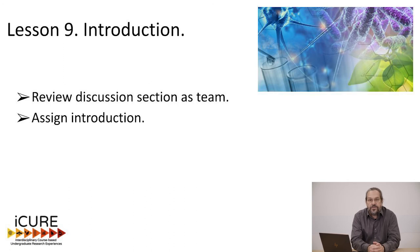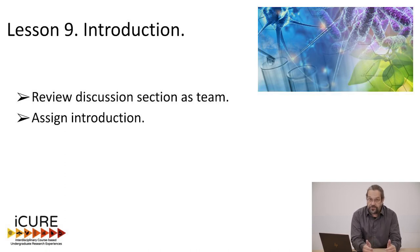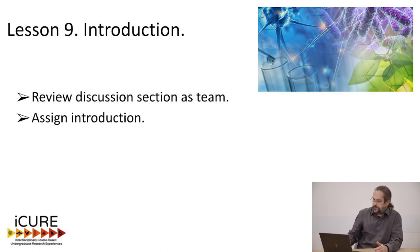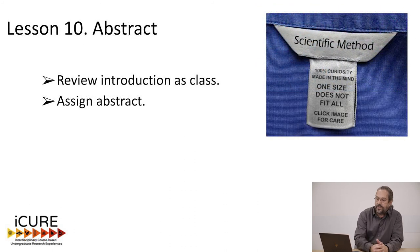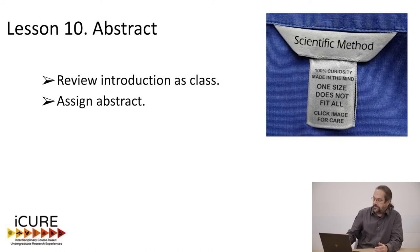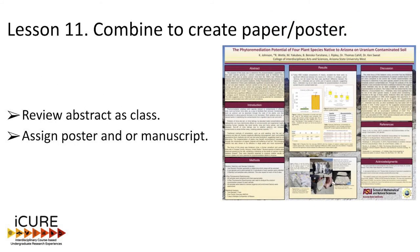Now you start having them write the introduction. They've already done a proposal, so this is actually one of the easier steps. They need to write an introduction for the manuscript, as well as using it to edit down to a research poster. Finally, you have them review the introduction and begin the abstract — I always have students write the abstract at the very end after they've put everything together. Then we start combining these parts into either a manuscript or a poster.